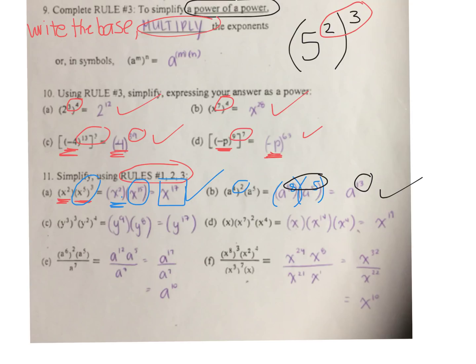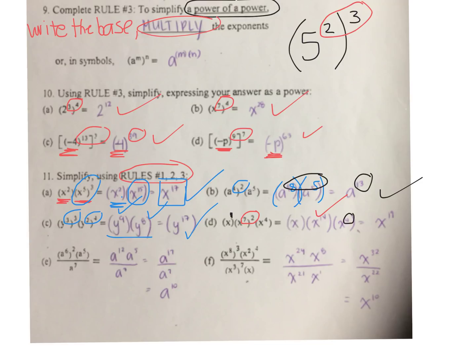We have two powers of a power: y to the power of 3 to the power of 3 — 3 times 3 is 9. And 2 times 4 is 8. Then add the exponents: 9 plus 8 is 17. Please make sure you write in the number 1 — when you don't see an exponent, include to the power of 1. So we multiply: 7 times 2 is 14, plus 4 plus 1 equals 19.